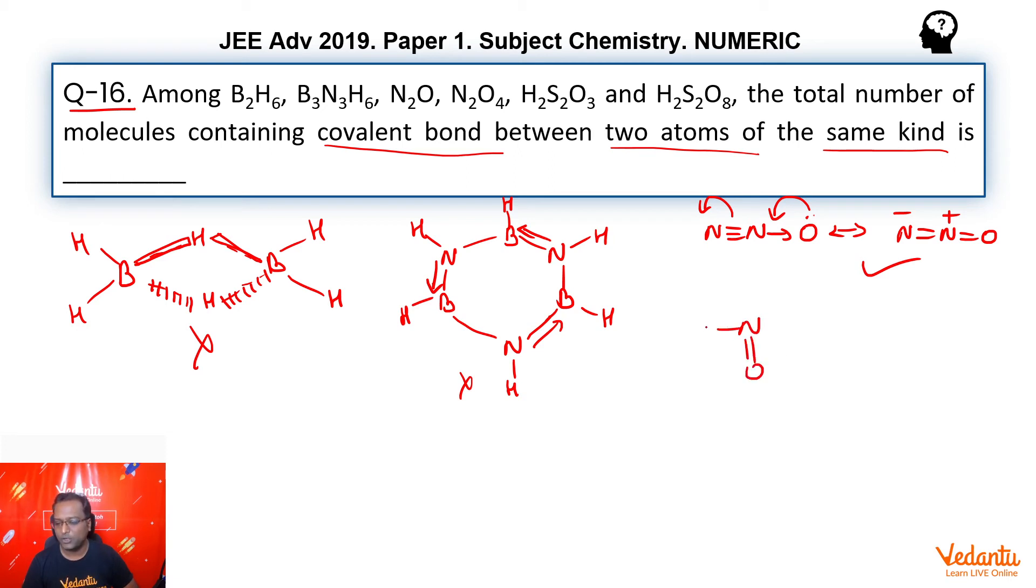N2O4, the N2O4 is a dimer of NO2 and the structure is this. So as you can see, there is a NN same atom bond.